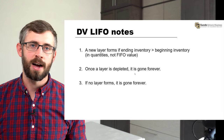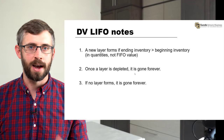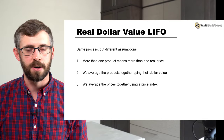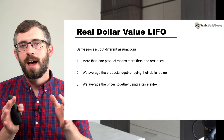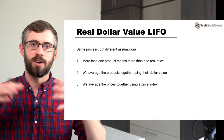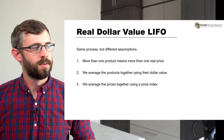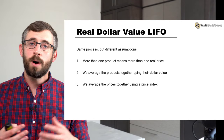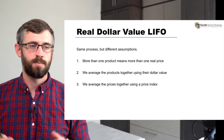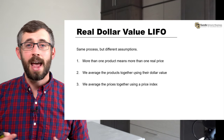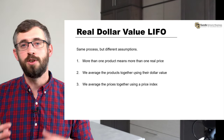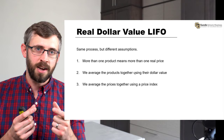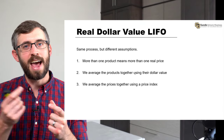Now let's cover how we aggregate this across multiple products, which is what happens in real life. If we have more than one product, we have more than one price. So we're going to aggregate or average these products together using their dollar value, and we're going to average the prices together using a price index. We're still going to have what looks like a price, but what it really is is an average price change.